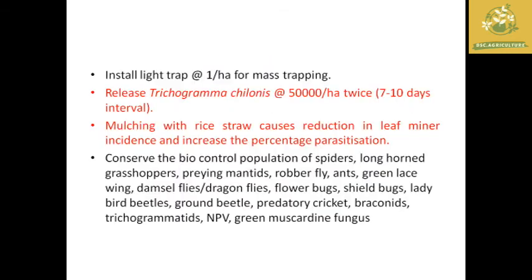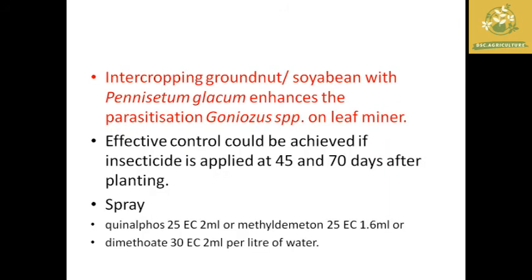Use of light traps at one per hectare is recommended for moth trapping and monitoring of insects. We can also release biocontrol agents like Trichogramma chilonis at 50,000 per hectare. Mulching with rice straw can reduce leaf mining incidence and also increase the percentage of parasitism naturally present in the field. Conservation of biocontrol population species at the field level helps reduce pest incidence.